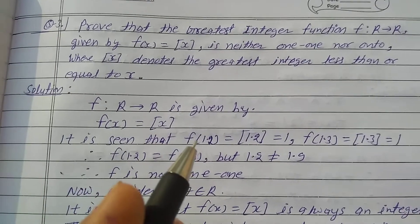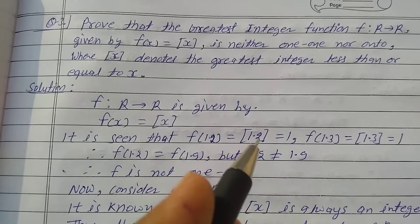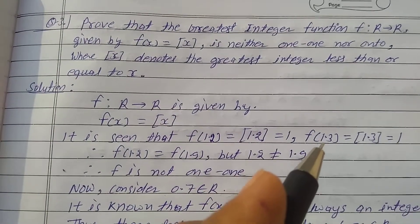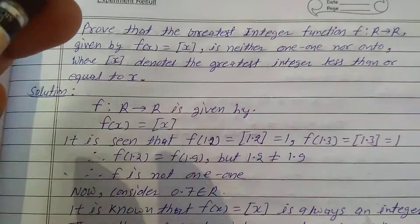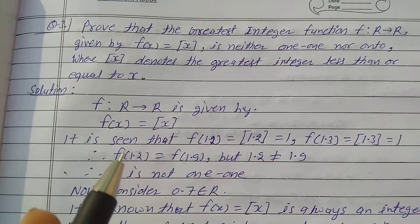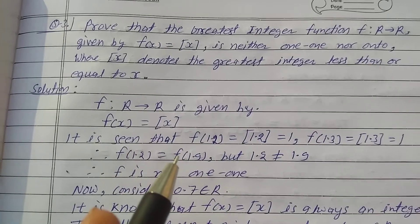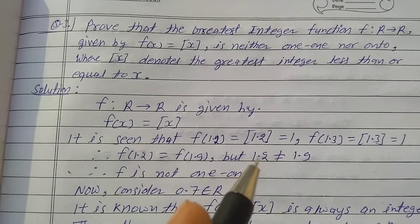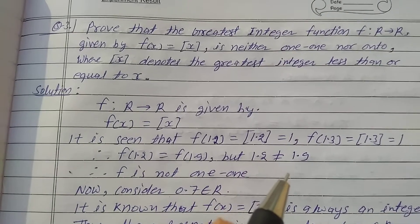It is seen that f(1.2) = [1.2] = 1, and f(1.3) = [1.3] = 1. Therefore f(1.2) = f(1.9), but 1.2 ≠ 1.9.